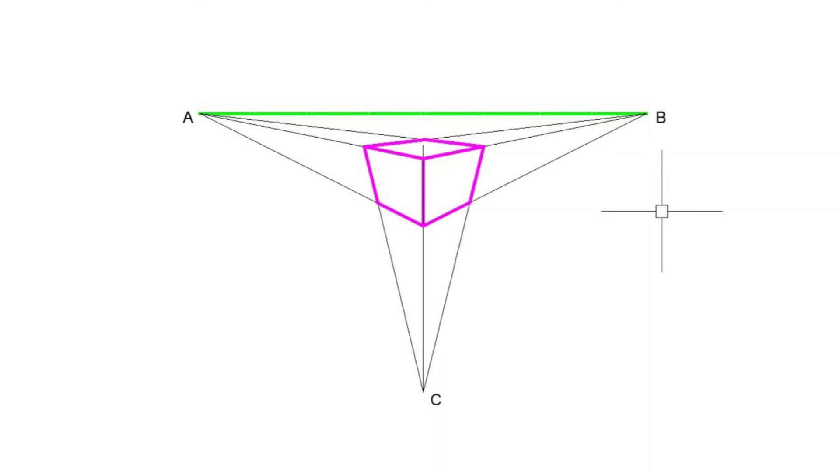So when you add a 3rd vanishing point in a 3 point perspective, you usually change the shape of the object in a vertical manner. The horizon line and the horizontal vanishing points usually affect the horizontal shape of the object. But when you add that 3rd vanishing point, it now affects the vertical shape as well. So these are examples of the 3 different perspective drawings, the 3 different types of perspectives.